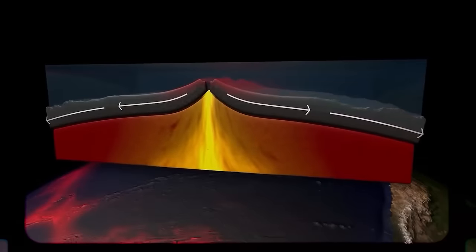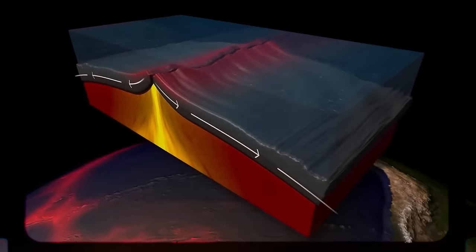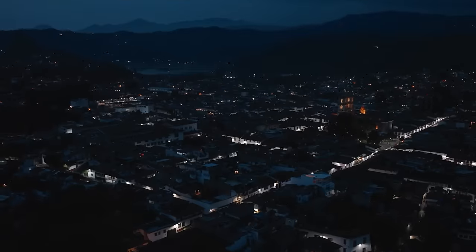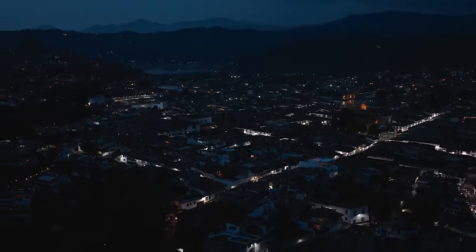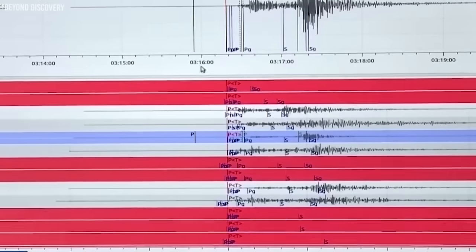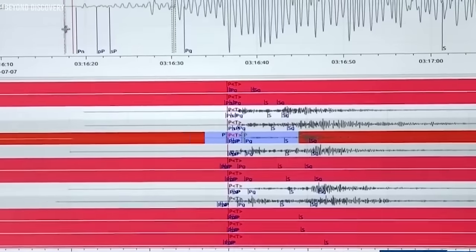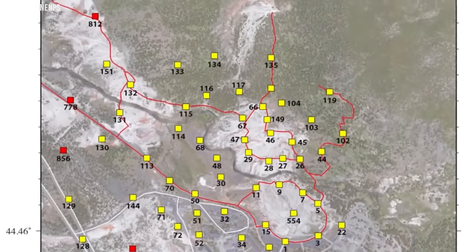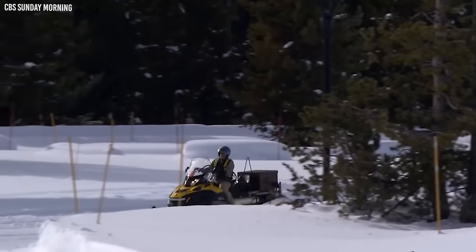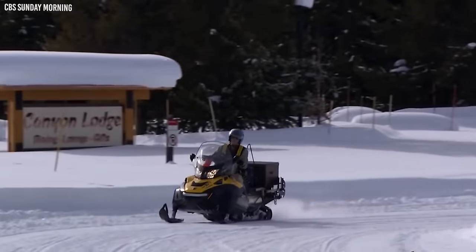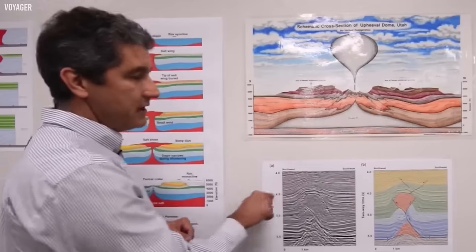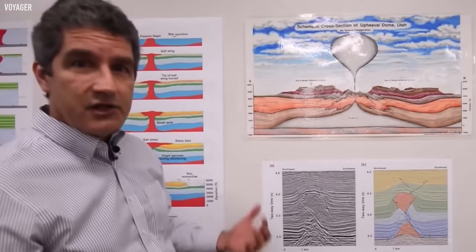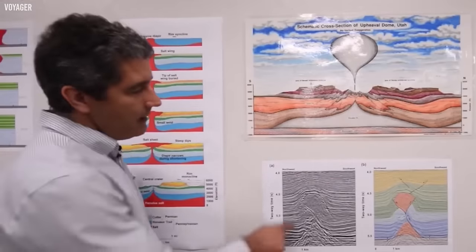While most of the earthquakes in Yellowstone have magnitudes of 2.0 or lower, making them too small for people to feel, they can still be detected by a network of seismological monitoring tools called the Yellowstone Seismic Network. Gathering data during winter can be challenging due to cold temperatures and heavy snowfall.